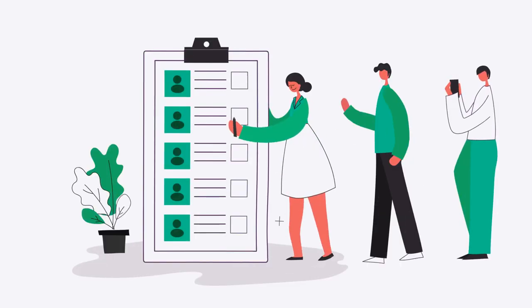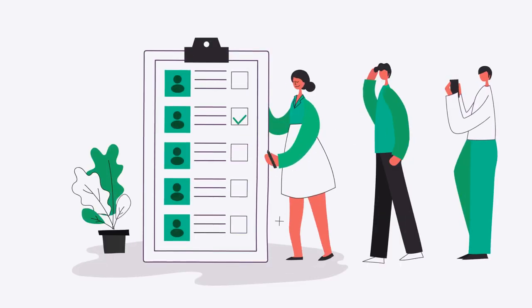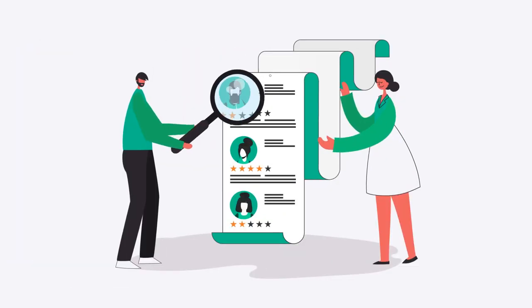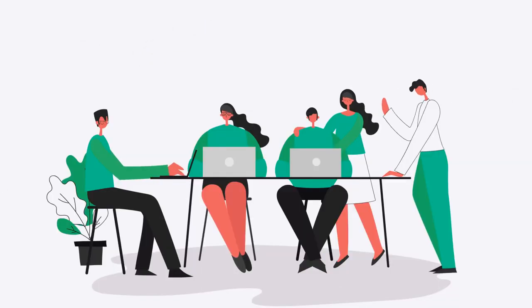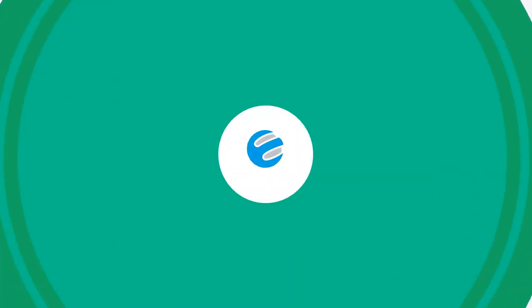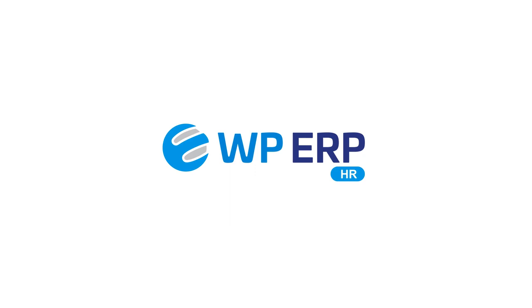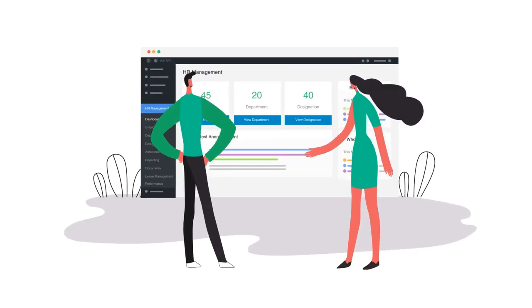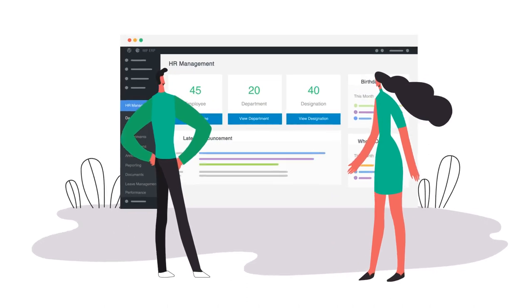Facing problems with keeping track of attendance, recruitment, documents, payroll, and training of each employee in the organization? Well, WPERP HR is a WordPress HR module that empowers your workforce with an online and efficient human resource management system.